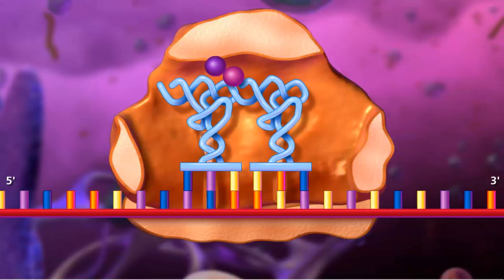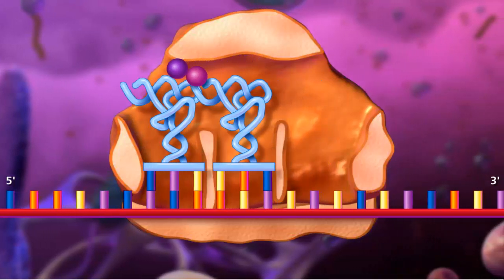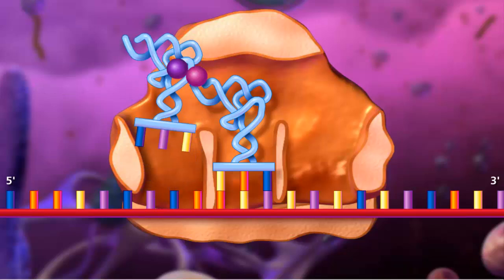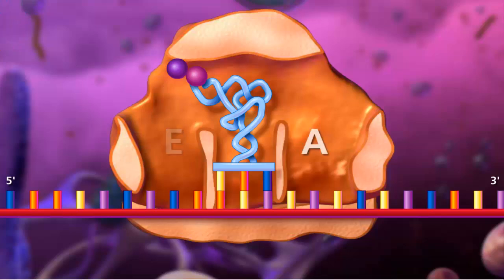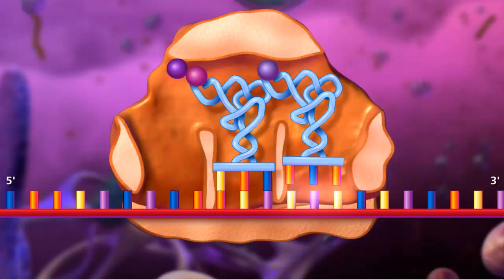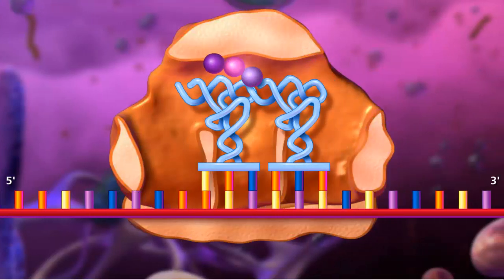The complex slides down one codon to the right where the now uncharged transfer RNA molecule exits from the E site and the A site is open to accept the next transfer RNA molecule. Elongation will continue until a stop codon is reached.